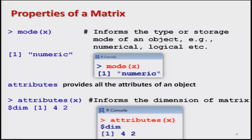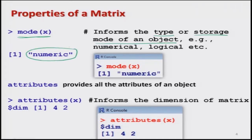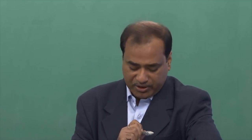There is another command we discussed earlier — just for quick revision. This is `mode(X)`. Mode of X provides us information about what type of variable it is and what type of storage mode the object contains. For example, this can be a numerical value, a logical value and so on. Since our matrix X is a 4 by 2 matrix containing numbers from 1 to 8, as soon as I say `mode(X)`, it gives the answer 'numeric', meaning all values in the matrix have a numeric character.